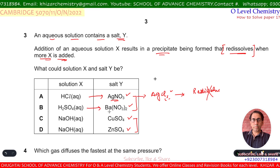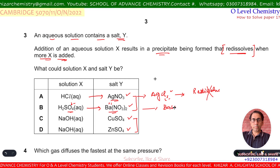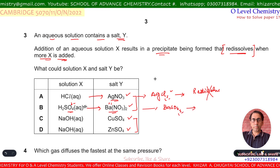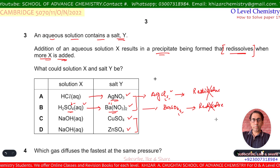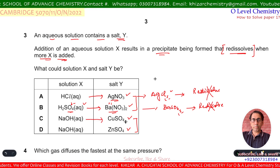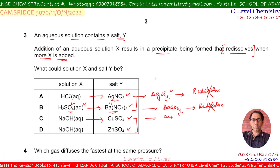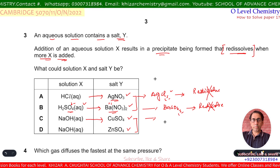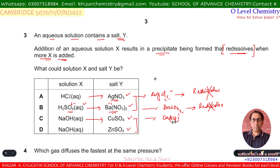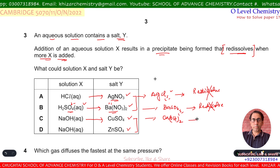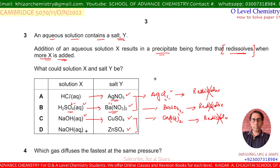When H₂SO₄ is added to barium nitrate, barium sulfate — a white insoluble compound — forms, but adding excess H₂SO₄ does not redissolve it, so B is incorrect. When NaOH is added to copper sulfate, a pale blue precipitate of Cu(OH)₂ forms, but adding excess NaOH does not redissolve it either. D is the remaining option.